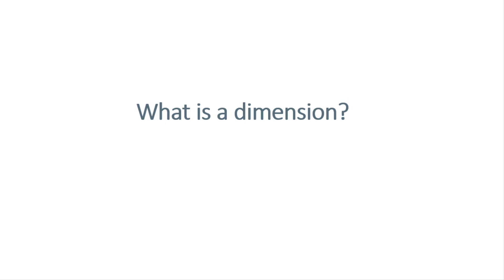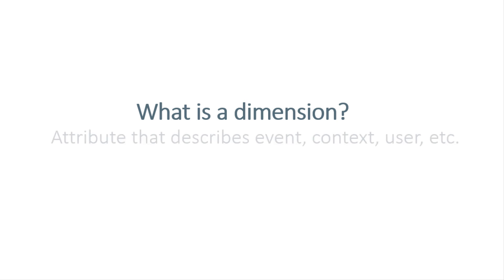First, let's take a quick look at what a dimension is in general. A dimension is basically an attribute that describes an event, a context, a user, or something else like a product. In other words, it is a parameter or a property of an item that helps you better understand what kind of item it is, or what kind of event, or when it happened.